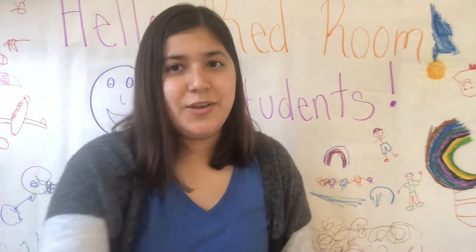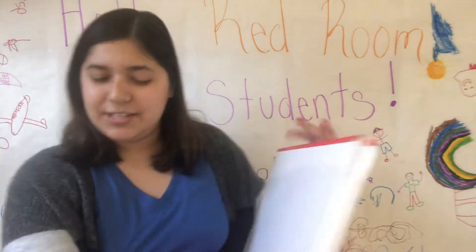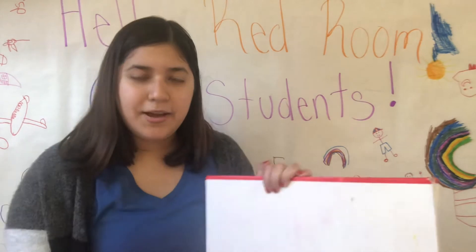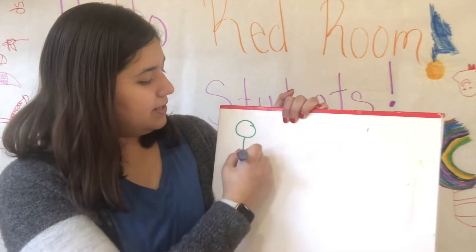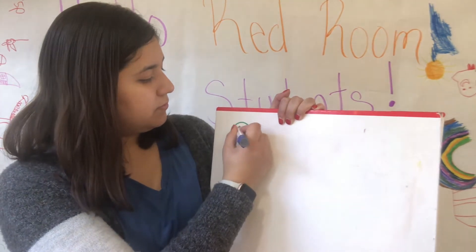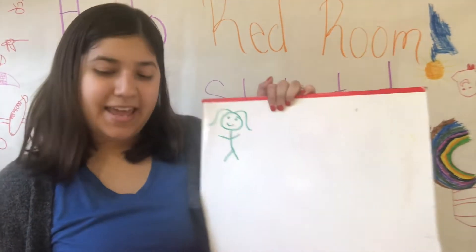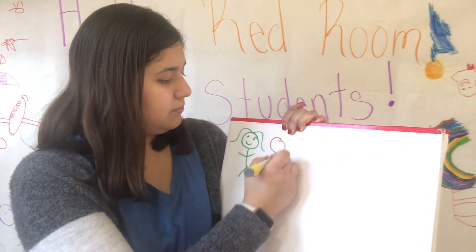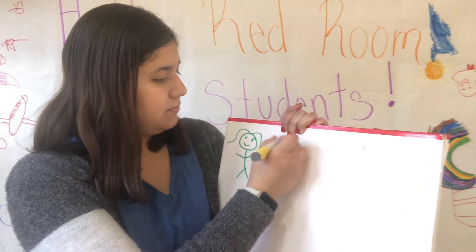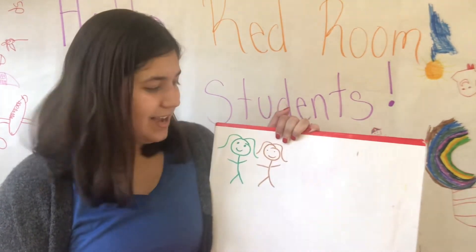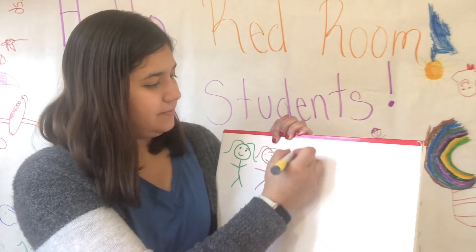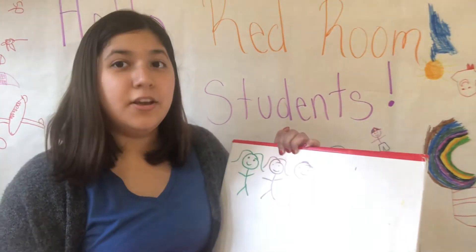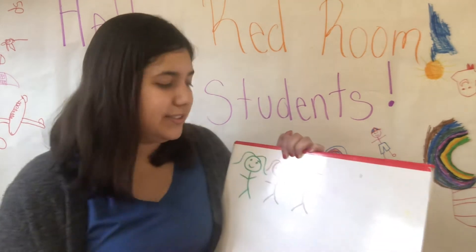Today I want you to show me who is in your family. Let's do it together. Today I am going to show you my family. In my family I have myself, and I have my mom, and I have my dad. I have two brothers and two sisters.